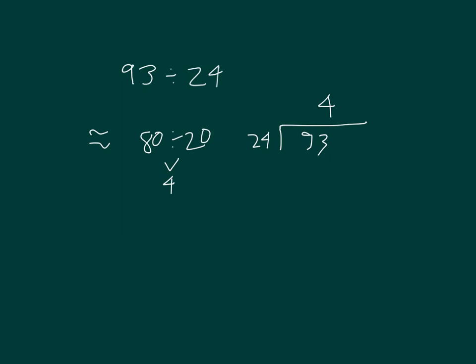4 times 24. 4 times 4 is 16. 6, we group a 1. 4 times 2 is 8. Plus 1 is 9. 96. Oops, that's too much. So we can revise. And we revise to 3.